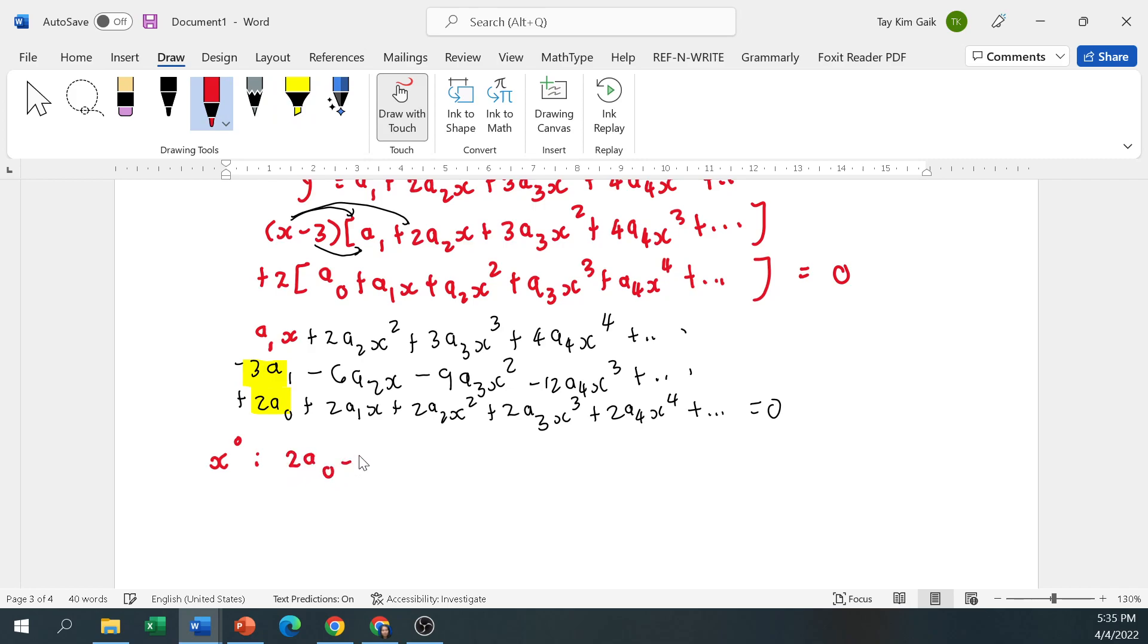So you have 2a0 minus 3a1 equal to 0. Solving for a1 in terms of a0, so a1 equal to 2a0 divided by 3.